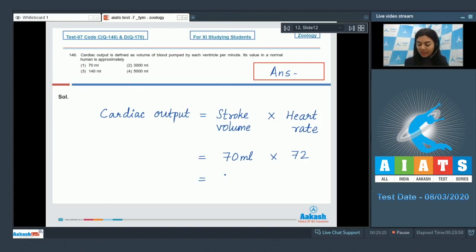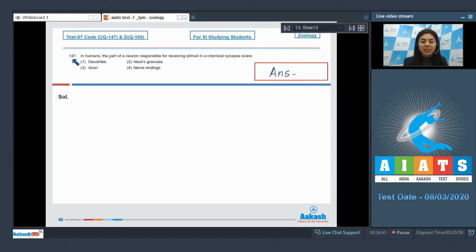The stroke volume is approximately 70 ml and heart rate is 72 beats per minute, which gives us about 5040 ml, approximately 5 liters of blood pumped out by heart per minute. That is your cardiac output. The correct answer is option 4, 5000 ml. Option 1, 70 ml is the stroke volume, and options 2 and 3 are incorrect.